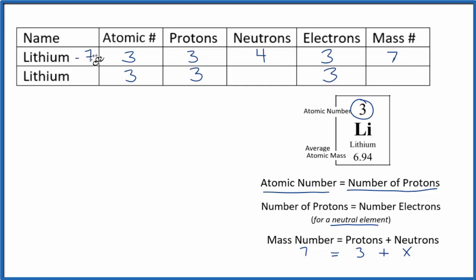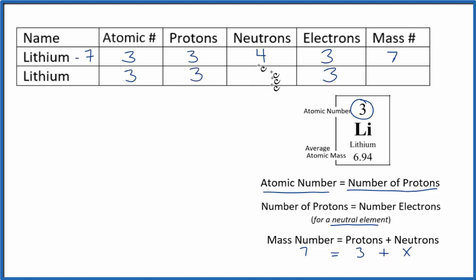We have all our information for this isotope of lithium, and we call it lithium-7 because of the mass number. In fact, 92.4% of all lithium atoms — if you took a sample of lithium — would be lithium-7, having four neutrons and three protons.